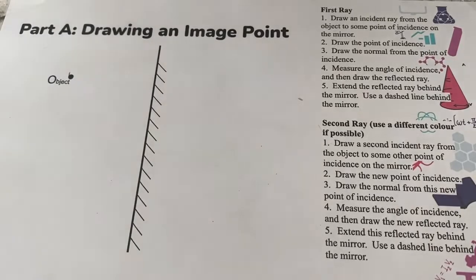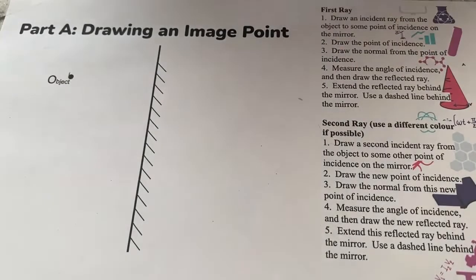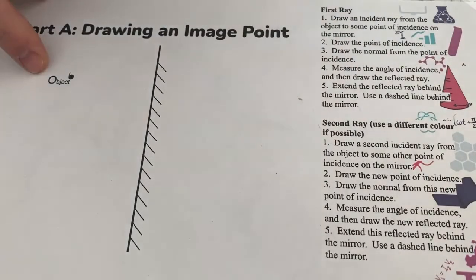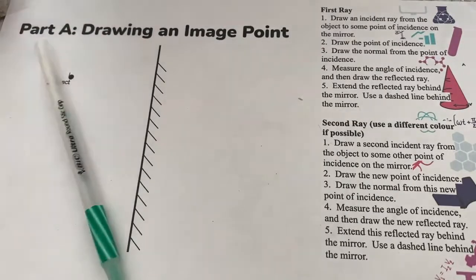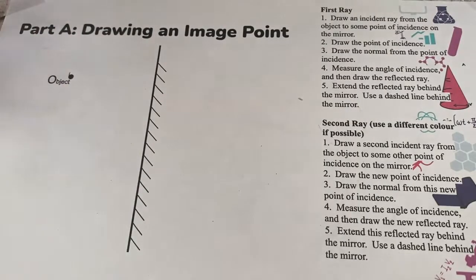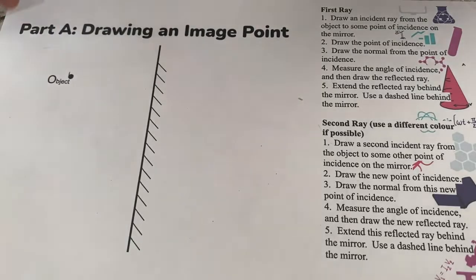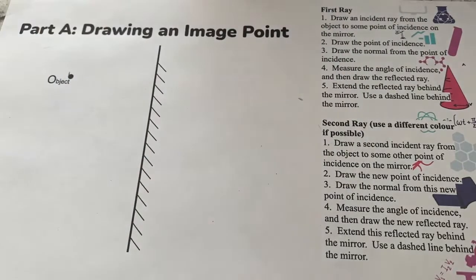Now that you have a general idea of how to find an image in a mirror, let's look specifically at how we can find exactly where that image would be located. We've got an object — we're going to start simple, we're going to start with just a dot. The reason we're going to start with just a dot is that when we look at more complicated objects, even something as simple as a pen or a pencil, we're going to have to use more than one point.